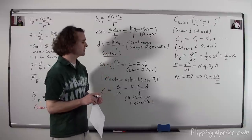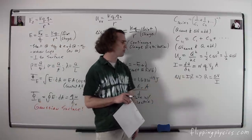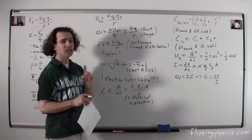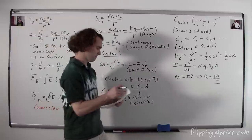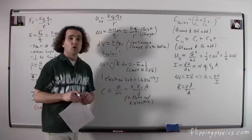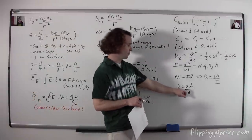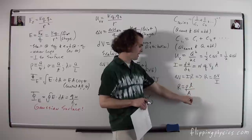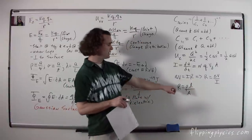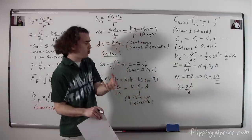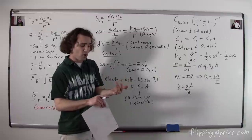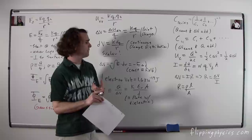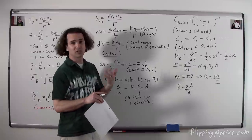Resistance: electric potential difference equals current times resistance, or R = ΔV/I. Not to be confused with resistivity. Resistance in terms of resistivity: R = ρL/A, where ρ is resistivity, L is the length, and A is the cross-sectional area. Resistance is a property of a specific geometric object, whereas resistivity is simply a material property.